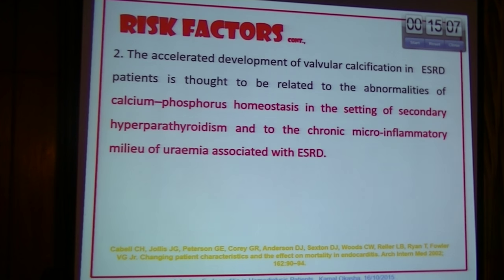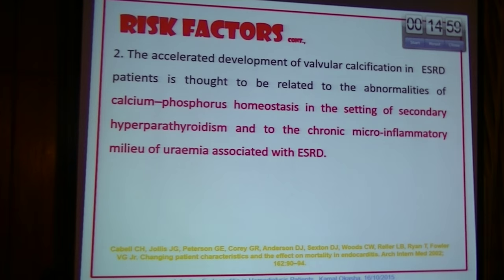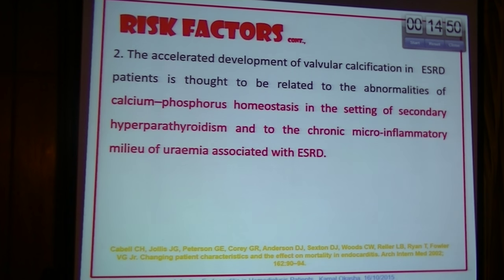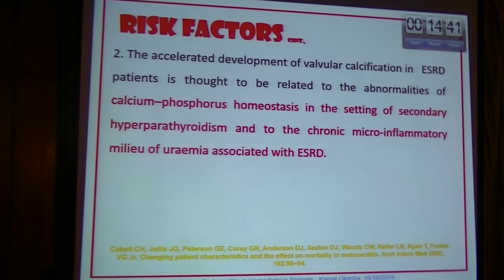The second risk factor is the accelerated development of valve calcification in end-stage renal disease. Vascular calcification affects mainly the annular valves — aortic and mitral. This occurs as a result of calcium-phosphate abnormalities, hyperparathyroidism, and other factors related to vascular calcification including inflammation.